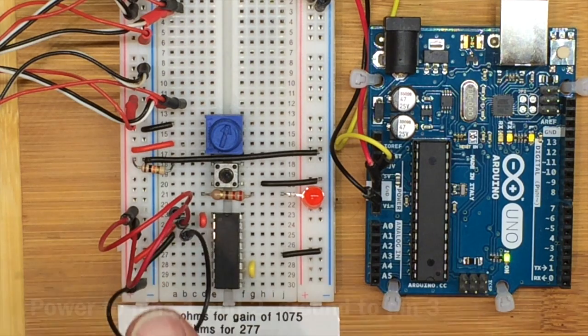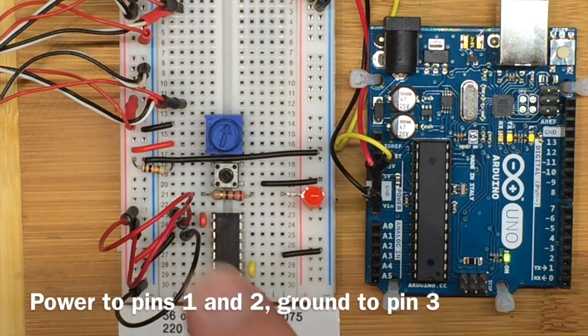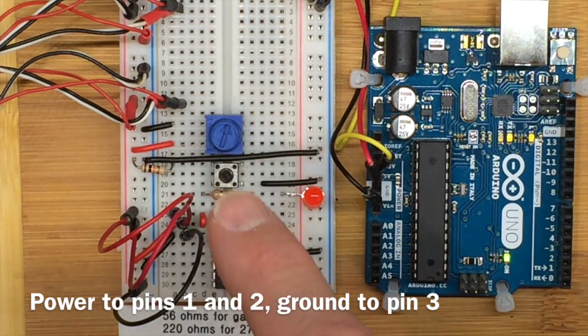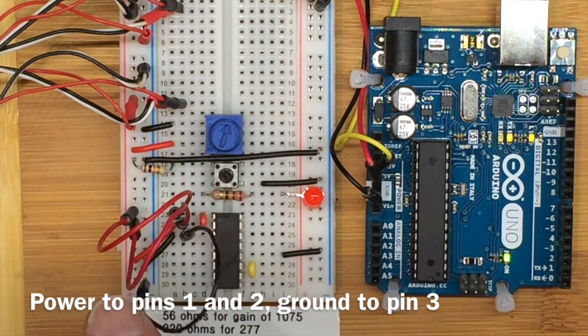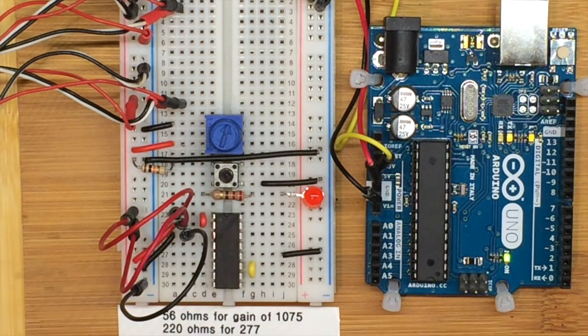As before, the black wire is connecting pin 3 to ground for the power supply, and the red wires are connecting pins 1 and 2 to plus 5 for the power supply and to keep the amplifier from going to sleep.